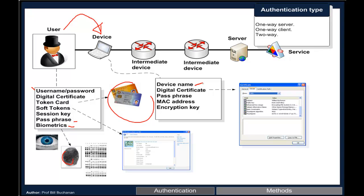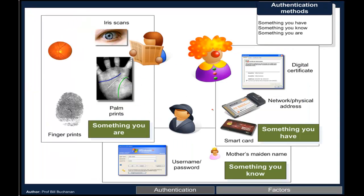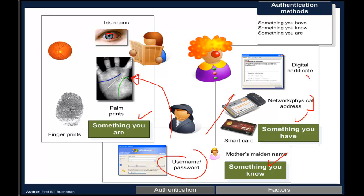Devices often authenticate using their name, a certificate, MAC address, or a certain encryption key. There are three main authentication factors: something you are (biometrics — palm prints, iris scanner), something you have (credit card, digital certificate, physical token), and something you know (username and password). Combining multiple factors provides higher levels of assurance of identity.